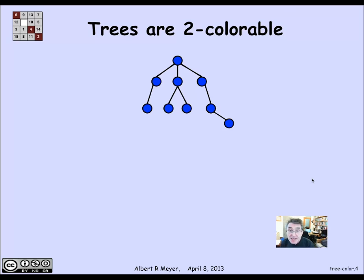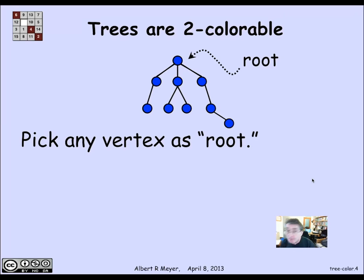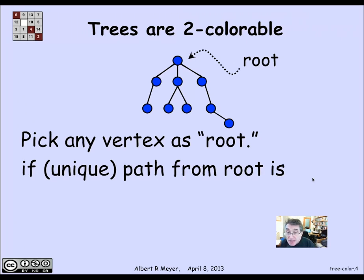The two-colorable way is that you just choose an arbitrary vertex and call it the root. You make the arbitrary choice on what the root is. And there's a unique path from the root to every vertex using this unique path characterization.